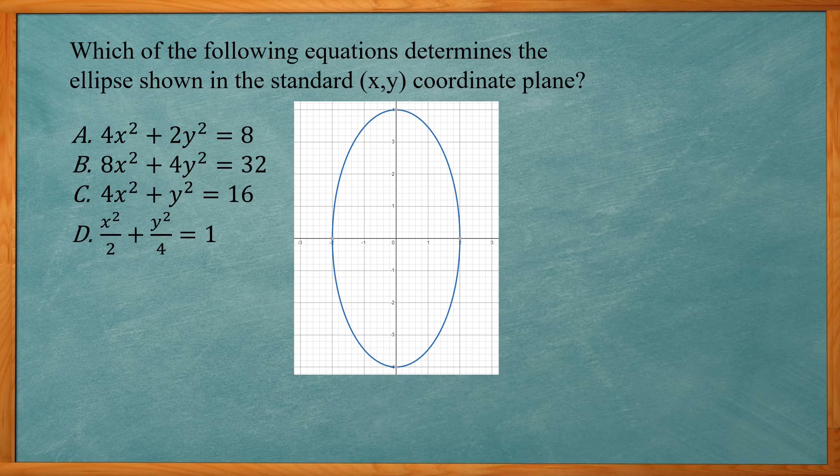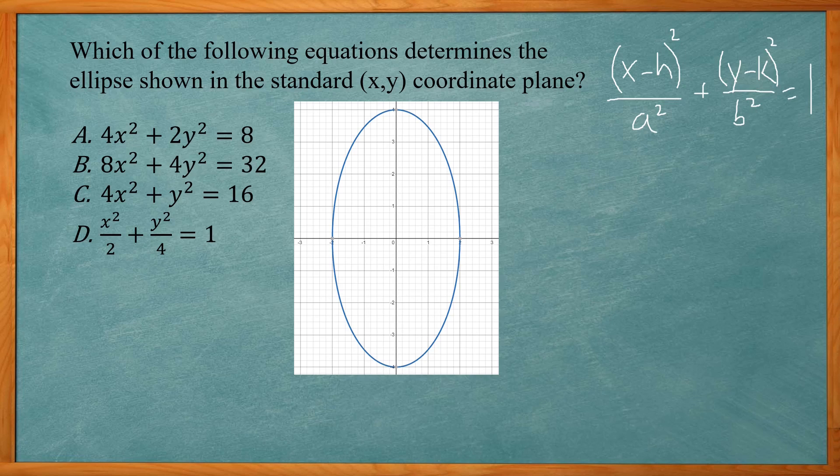Alright, so to solve this problem, you need to know the formula for an ellipse. This is (x-h)² over a² plus (y-k)² over b² is equal to 1.